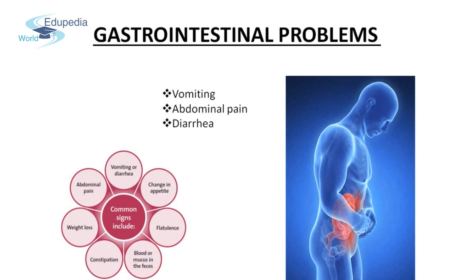Once it reaches the stomach, the food and fluid we have consumed are mixed with strong acids and dissolved. The digestive enzymes continue to break down this food into even smaller components. The food then goes to the small intestine, where it is digested further by juices from the pancreas and the liver. The nutrients that come out then flow into the blood and are supplied throughout the body. The rest of the undigested food comes out in the form of stool.